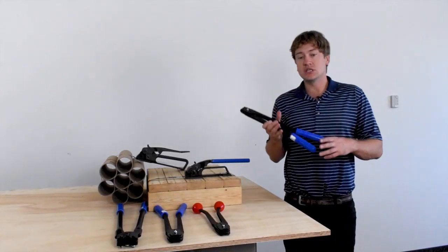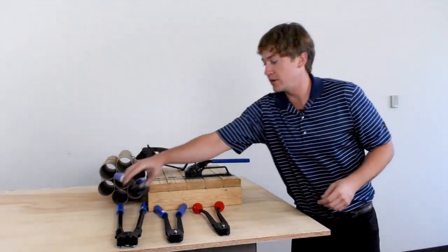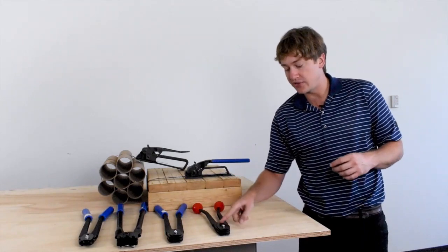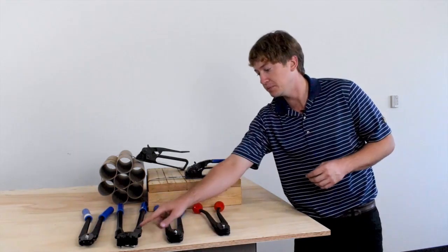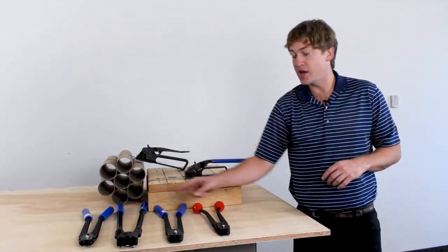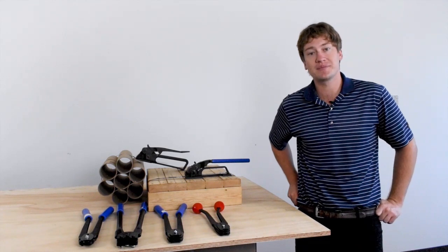So that was the EP1820 front action single notch sealer which rounds out our Encore offering of front action steel sealers. We had the EP1810, the EP1800, the EP1850, and again finally the EP1820. Three out of four of these being made right here at Encore Packaging in the USA. Thank you.